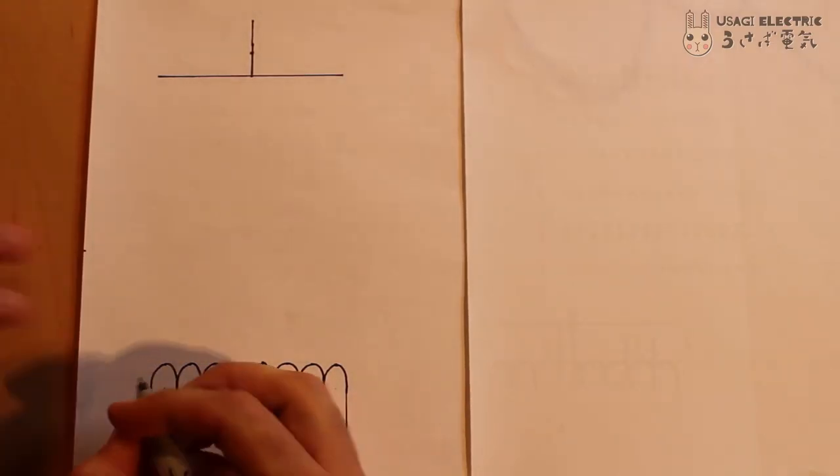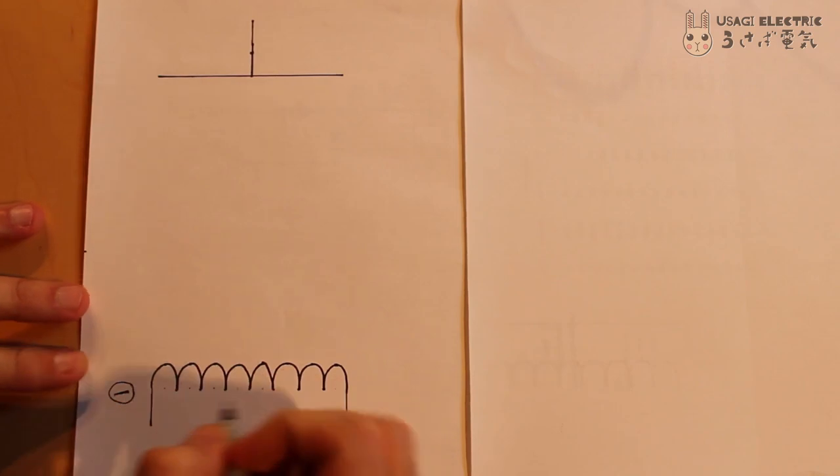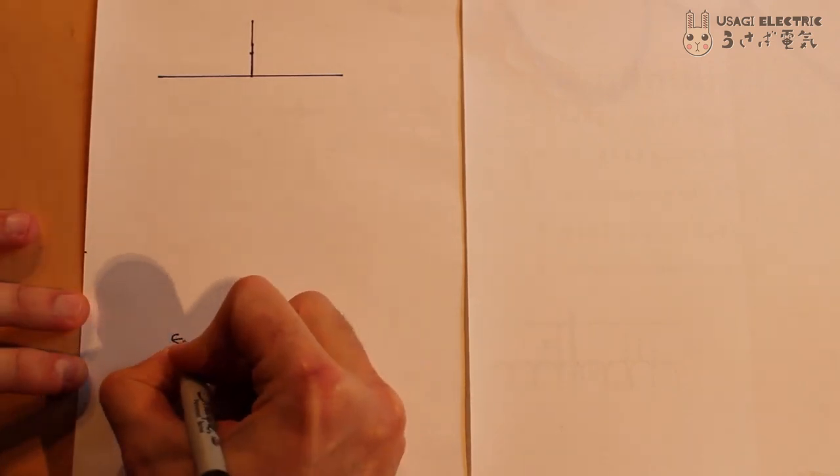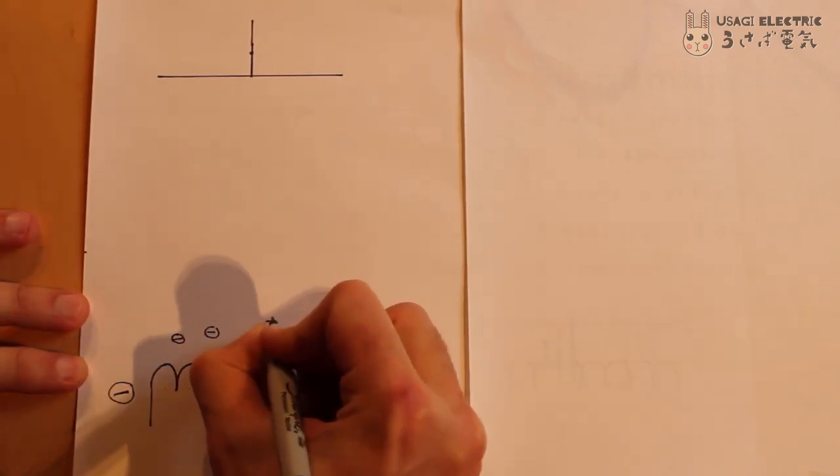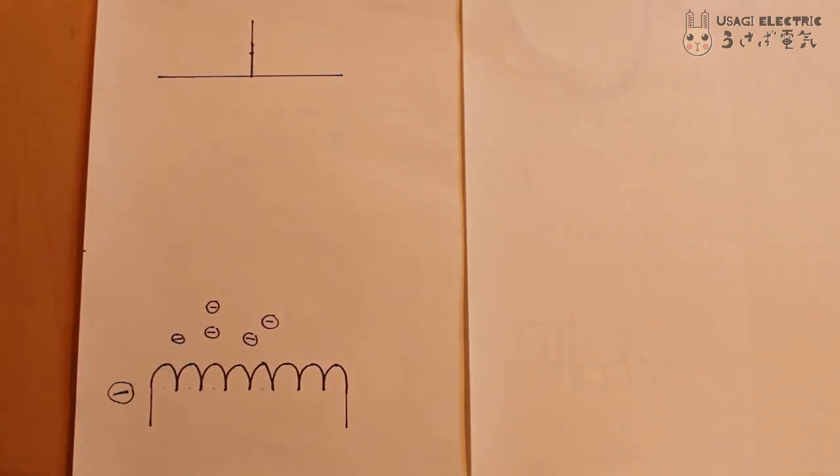In a vacuum tube, there is a filament inside a glass tube that has been pulled to a vacuum. If a separate negative charge is applied to that filament, the filament will start emitting electrons once it gets hot.